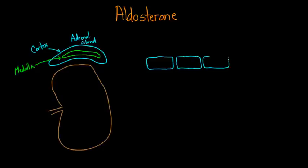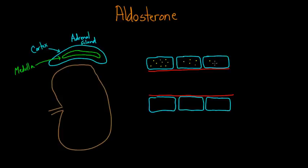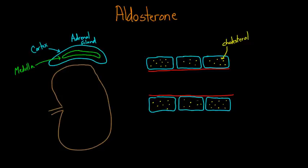Let me draw some cortex cells here. In the middle is a blood vessel running through. These cortex cells are basically like any other cells — they need food, nutrients, and oxygen. So these capillaries running through are going to provide all of that. If you were able to look deep within these cells, you'd notice there's cholesterol inside. This cholesterol is actually really useful because it helps make the hormone aldosterone — aldosterone actually comes from cholesterol. If you put the molecules next to each other, you'll see how similar they are.